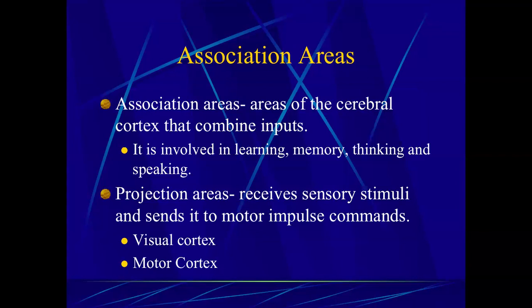The brain has association areas and projection areas. Association areas are where different parts of the brain converge on a specific region and combine input — like the angular gyrus, which is an association area for language. Projection areas send impulses at a distance. So the motor cortex sends a message from the brain down to the spinal cord and out to the muscles and glands — the impulse is traveling a great distance. That's the difference between association and projection areas.